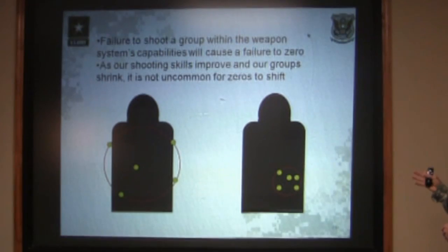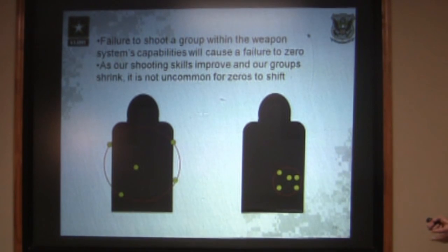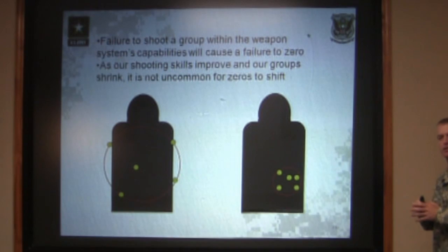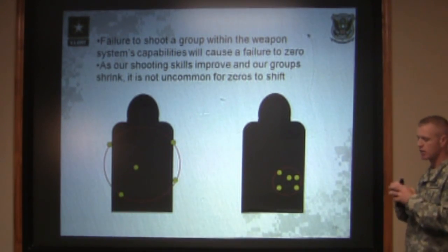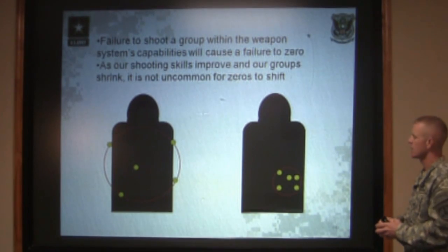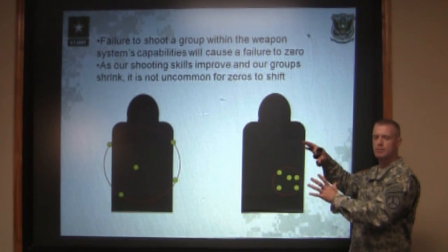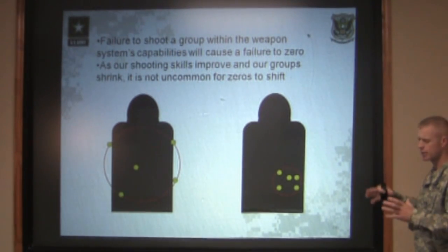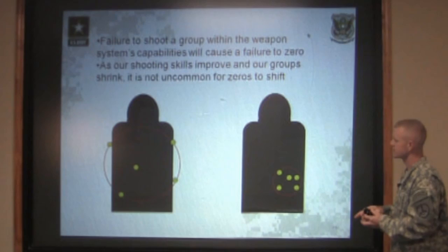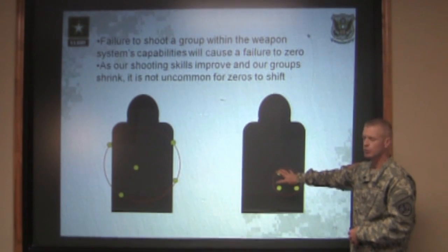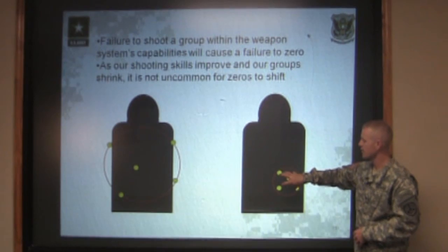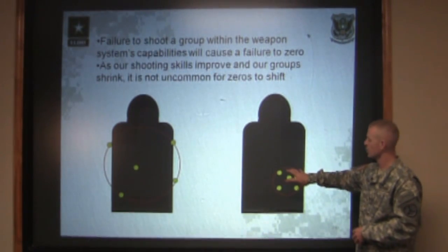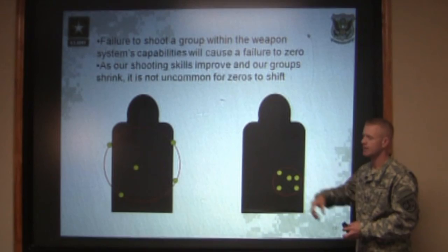A failure to shoot a group within the weapon system's capabilities causes a failure to zero. As your shooting skills improve, your group should shrink down on target, and it's not uncommon for zeros to shift when this happens. A shooter not comfortable with the rifle will shoot bigger groups; as they become more comfortable, groups shrink. Once they start shooting very tight groups right on top of one another, it's easy to make the correction and get them to center mass.